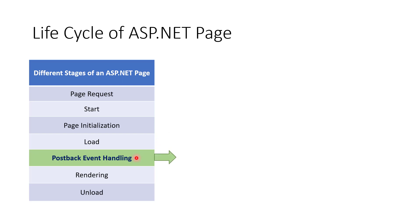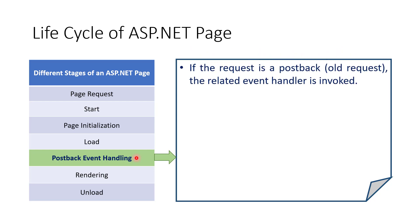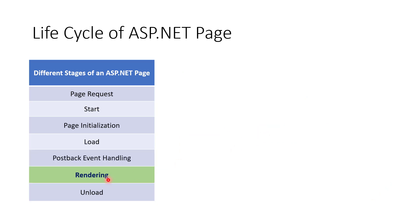The fifth stage is Postback Event Handling. In this stage, if the request is a postback, any event handlers can be invoked. After that, the validation controls on the page invoke the Validate method. The Validate method validates the controls, and the IsValid property is also used during this stage.